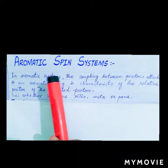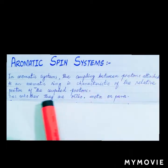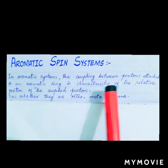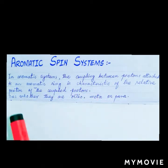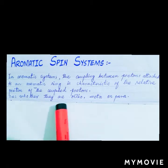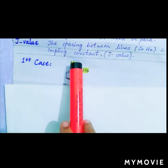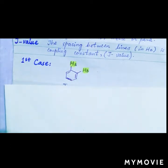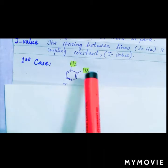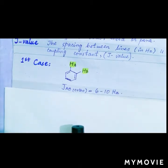In aromatic spin systems, the coupling between protons attached to an aromatic ring is characteristic of the relative position of the coupled protons, whether they are ortho, meta, or para. If we consider the first case in which two protons, Ha and Hb, will split each other with a J value of 6 to 10 hertz.